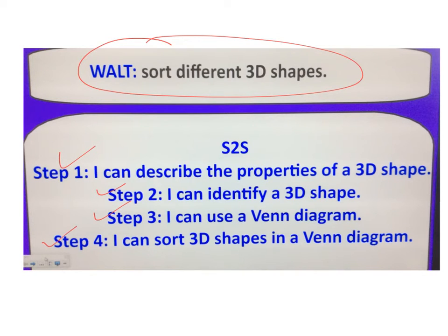So we've managed to do step one, step two, step three, and step four, which means we've managed to meet this target, and we can sort different 3D shapes using a Venn diagram. Awesome!